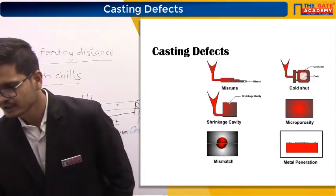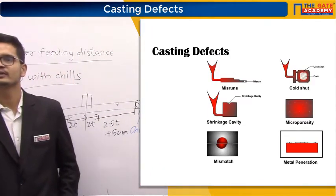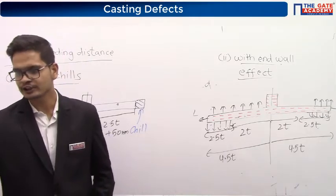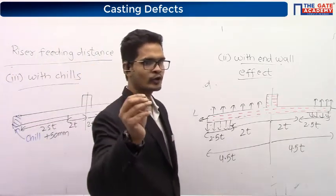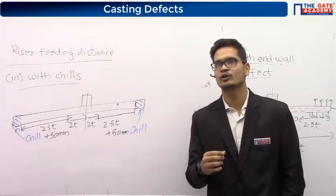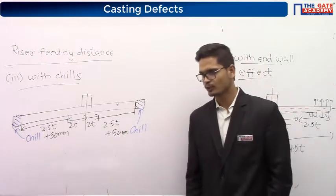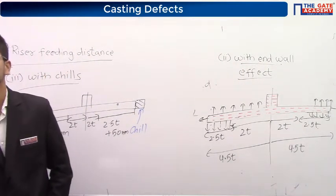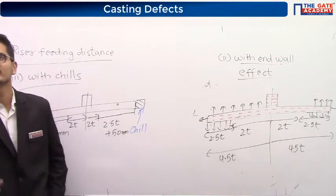Then we have mismatch. Defects caused by air are called blow holes. Blow holes are of different types: pin holes, pot holes. Only four minutes are left so we'll finish the class today and continue with casting defects tomorrow.